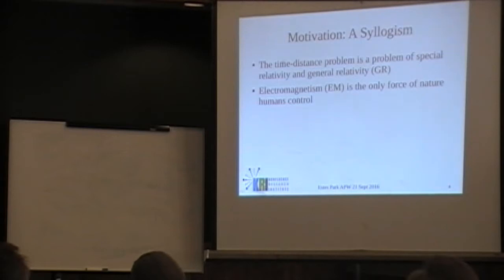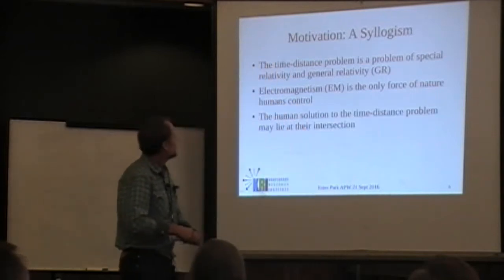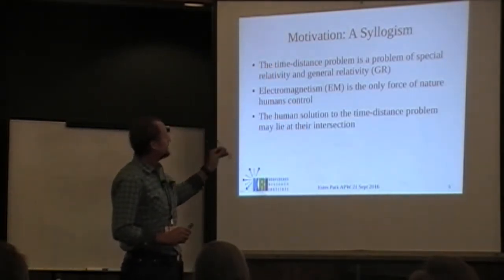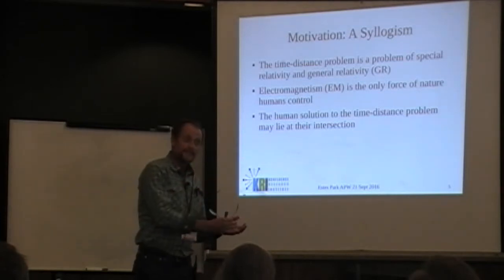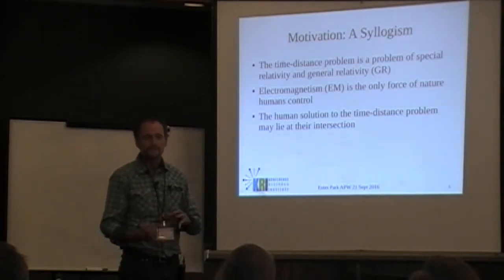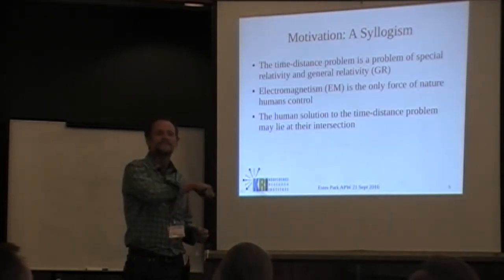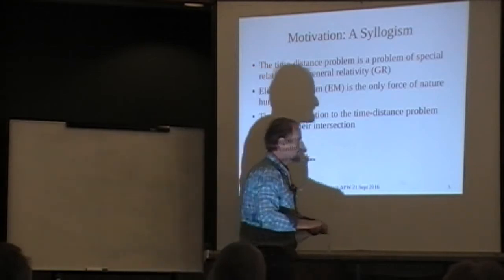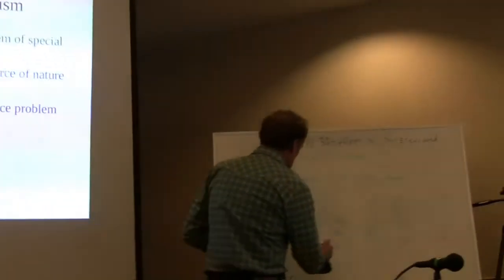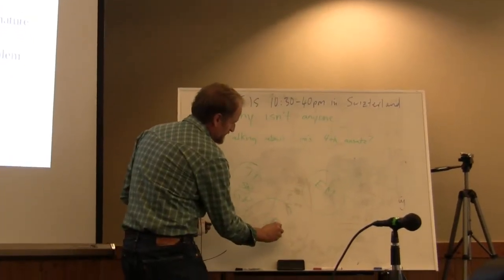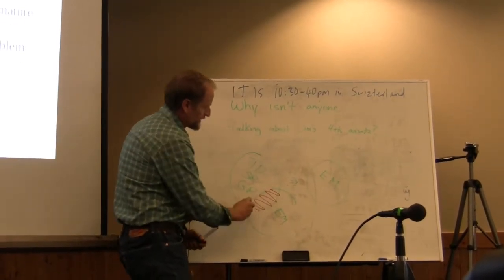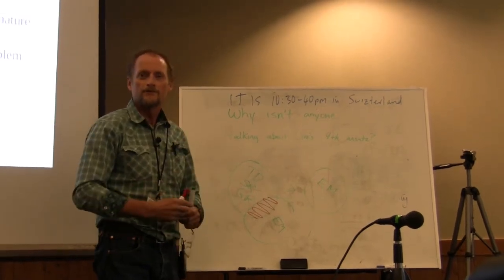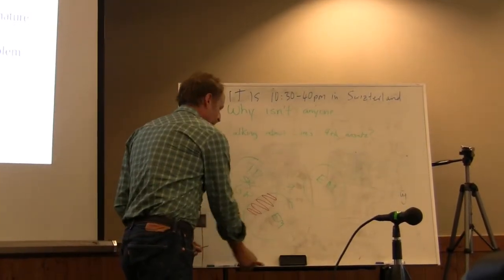Electromagnetism is the stuff we control. The thing that got me into this is maybe the solution to the time-distance problem is where general relativity intersects with electromagnetism. That would be great, because then our toolkit is adequate to the task. What I want to do is look for overlap - we want to work in the region of overlap with the force we control to surmount the time-distance problem.